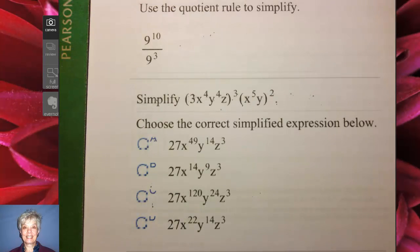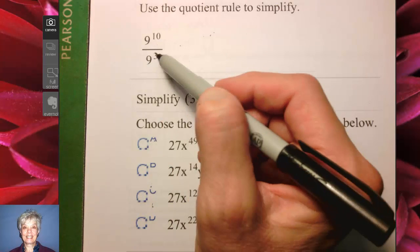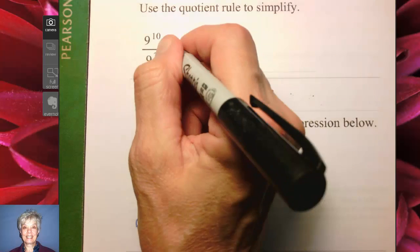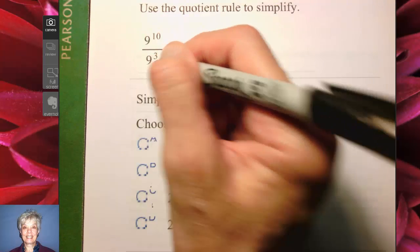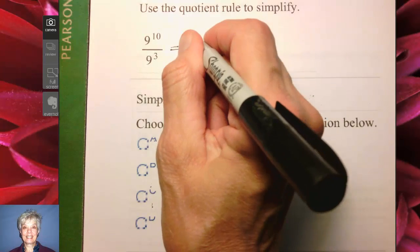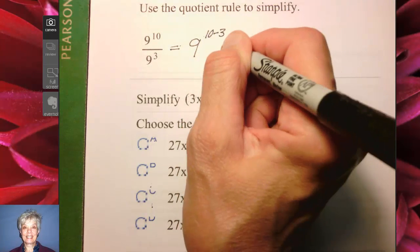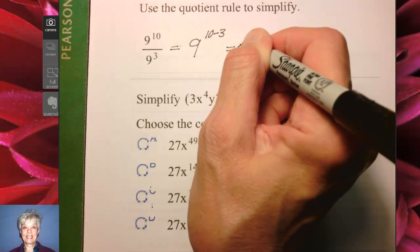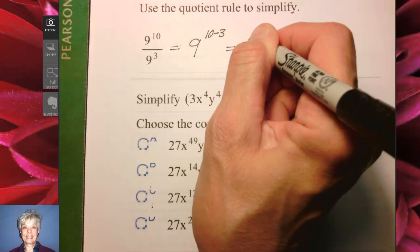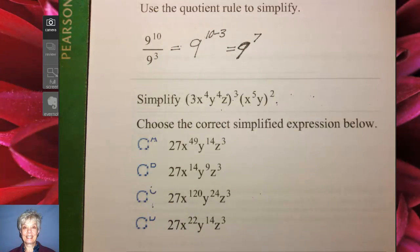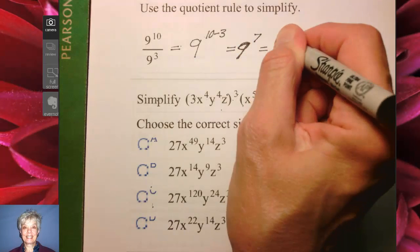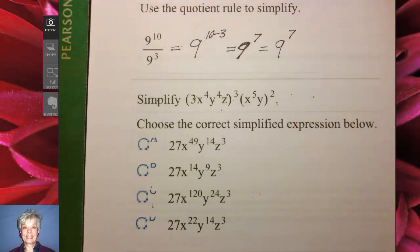Here we have something called the Quotient Rule. The Quotient Rule is used when you have like bases and you're dividing. When you have like bases and you're dividing, you subtract the exponents. This is going to be 9, the base, to the 10 minus 3 power, which is 9 to the 7th power. And that's how you should answer, because 9 to the 7th power is really big — better just to leave it as 9 to the 7th.